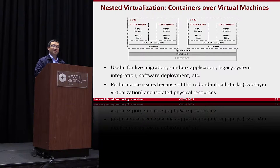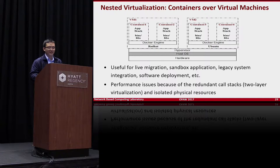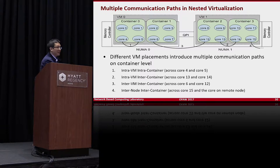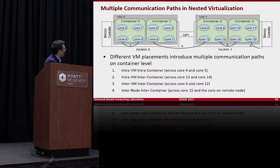Now, if your application runs in a container but the resource provider only gives you virtual machines, you end up with two-layer virtualization — a VM layer and a container layer — plus isolated physical resources, causing more problems. This slide shows the many communication paths in a nested virtualization environment: intra-socket inter-container, inter-socket inter-container, and cross-node communication — four different kinds of process interaction paths.